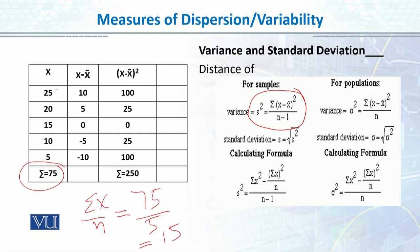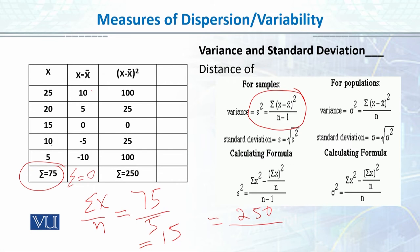Now I calculate x minus mean: 25 minus 15 is 10, 20 minus 15 is 5, and so on. The total of x minus mean is 0, confirming every deviation sums to zero. To get rid of this, we square each value: 10 squared is 100, 5 squared is 25, and all negative signs disappear. The summation of (x minus mean) squared equals 250. We then divide by n minus 1, which is 4, giving variance equal to 62.5.